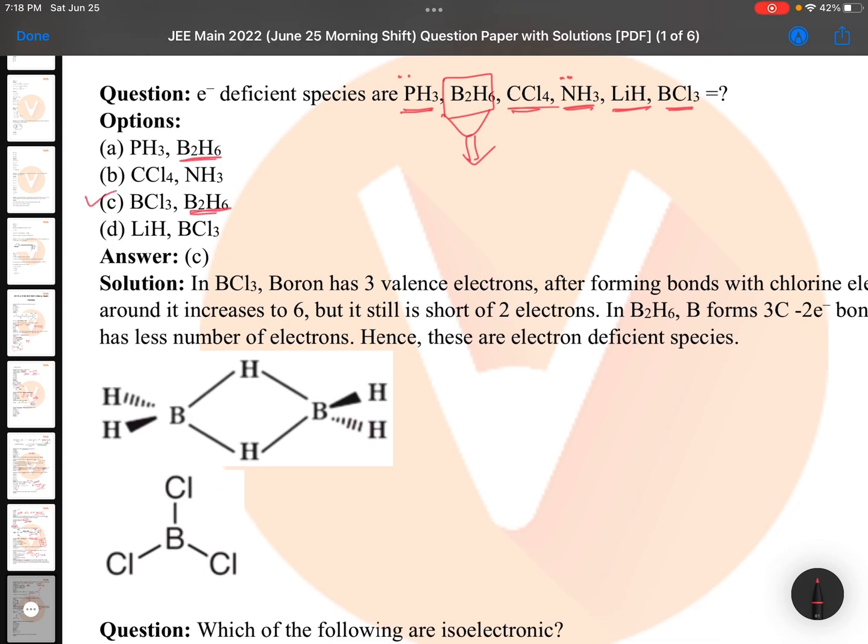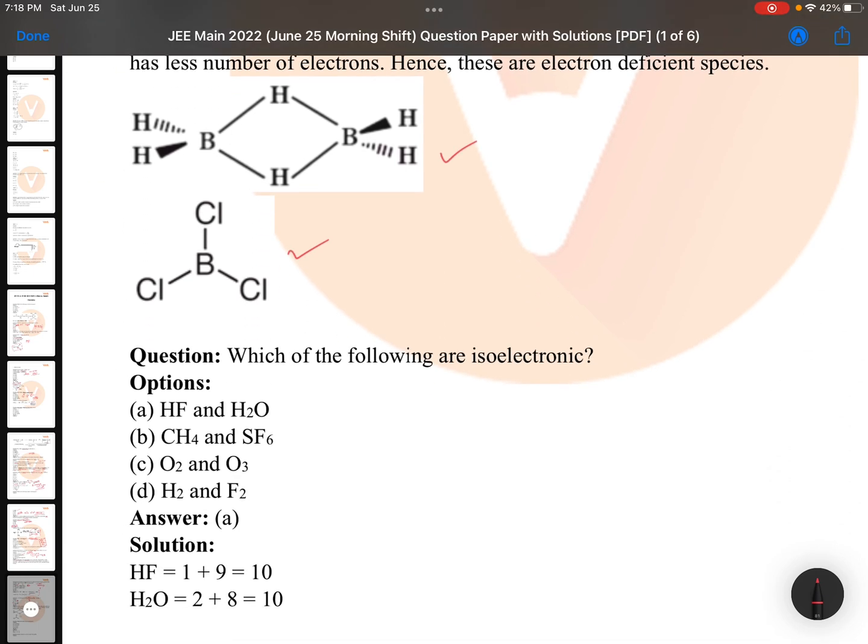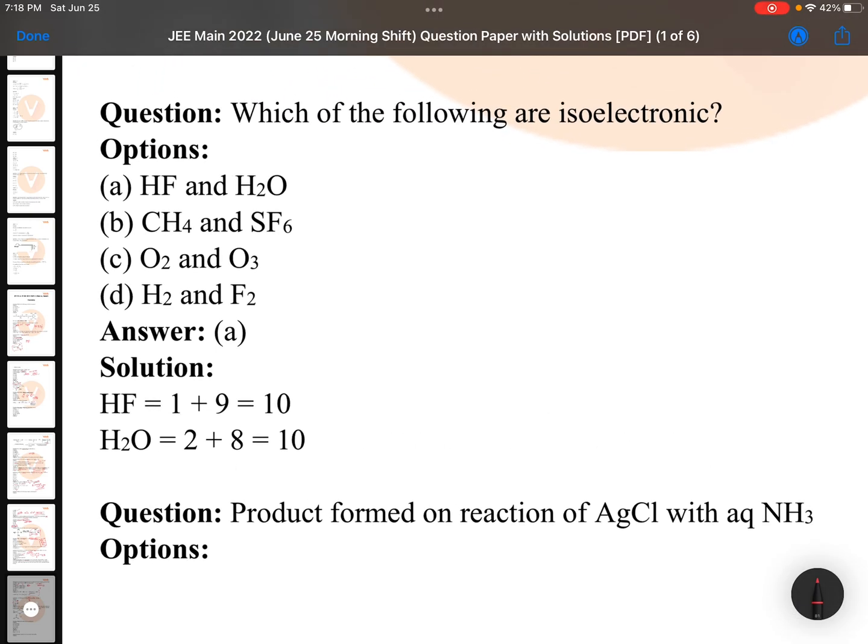Which of the following are isoelectronic? Very simple question, very basic. Isoelectronic means the same number of electrons. You can see hydrogen 1, fluorine 9, it is two hydrogens are there and 8. CH4, carbon and hydrogen, so total number of electrons will be 10. O2- sulfur is having 16, so it cannot be isoelectronic. O2 and O3 can never be. H2 and F2, so remaining options are also very easy options. So this is the easiest question.